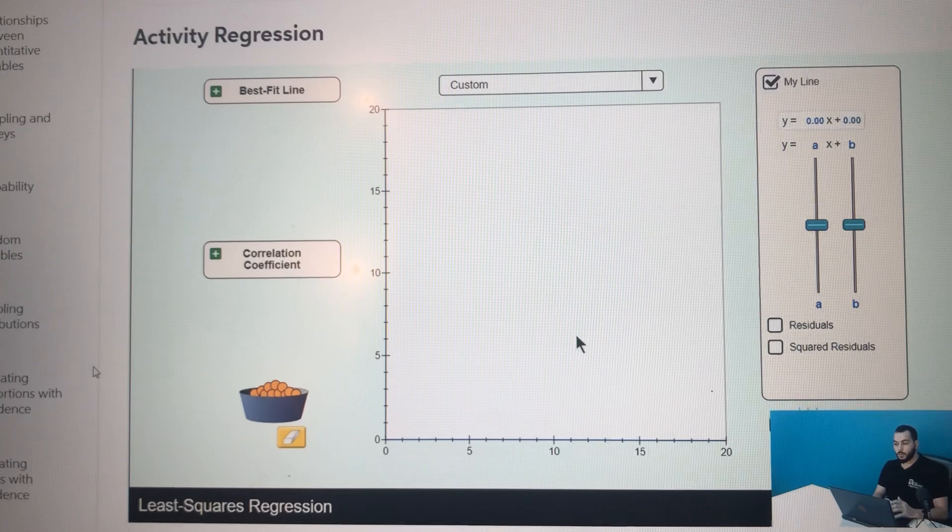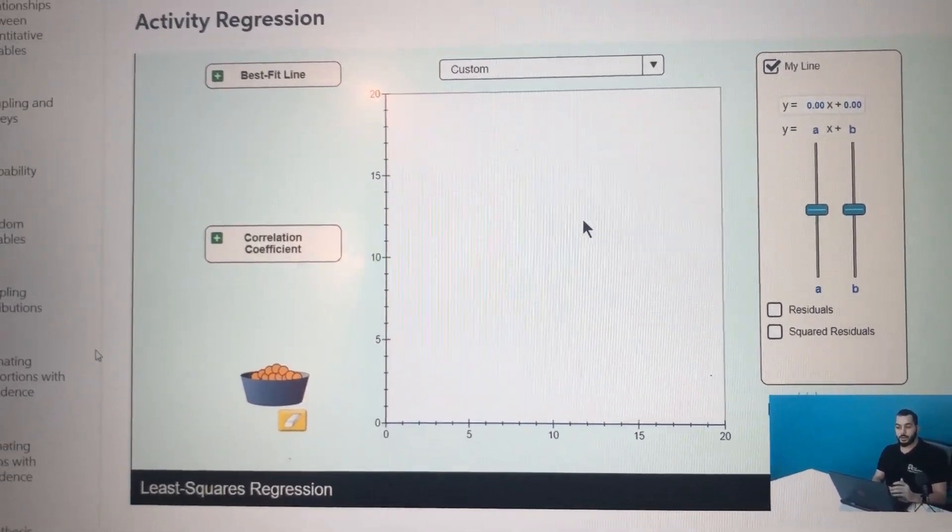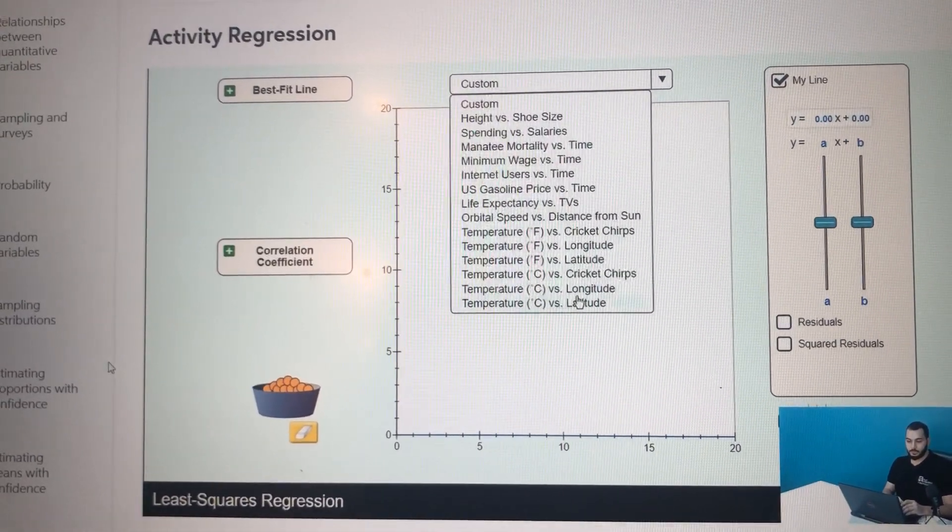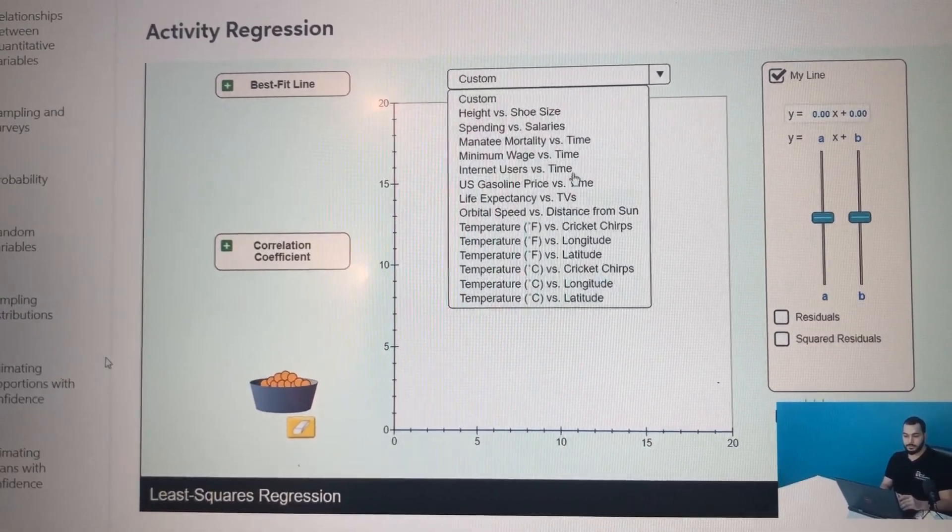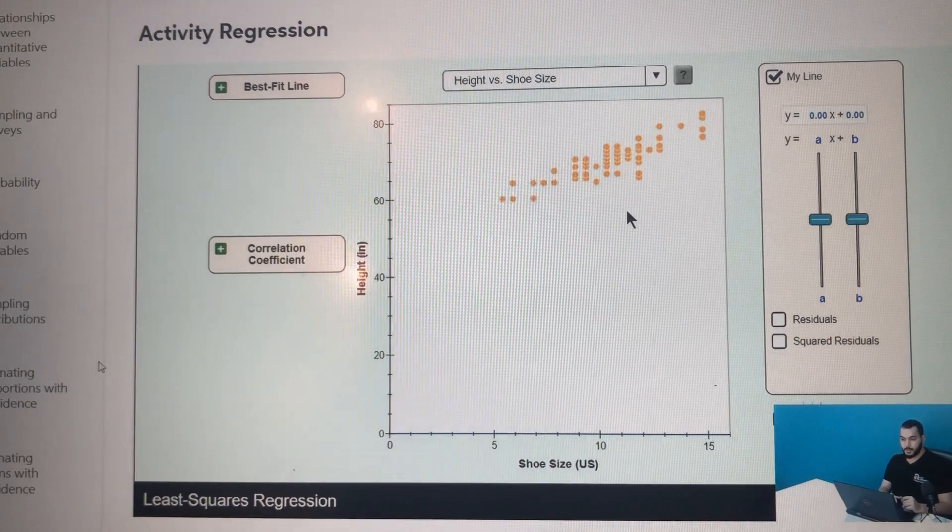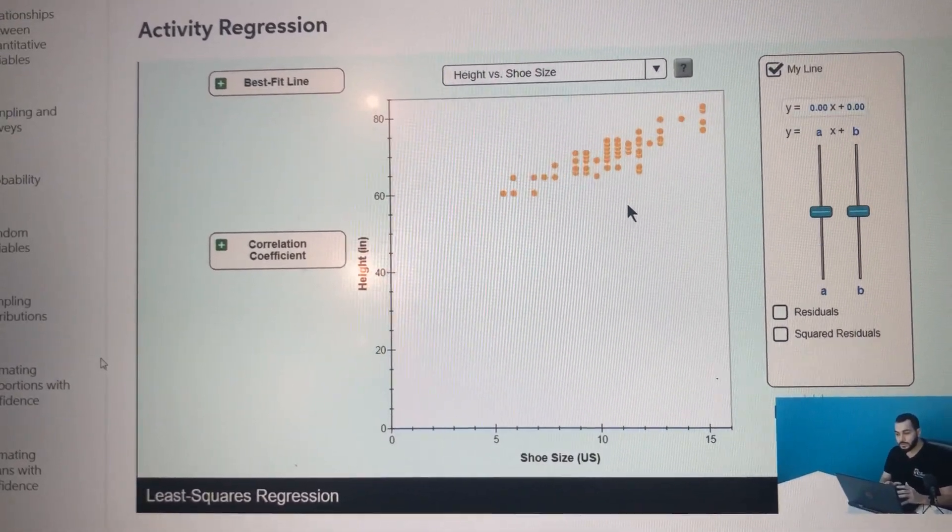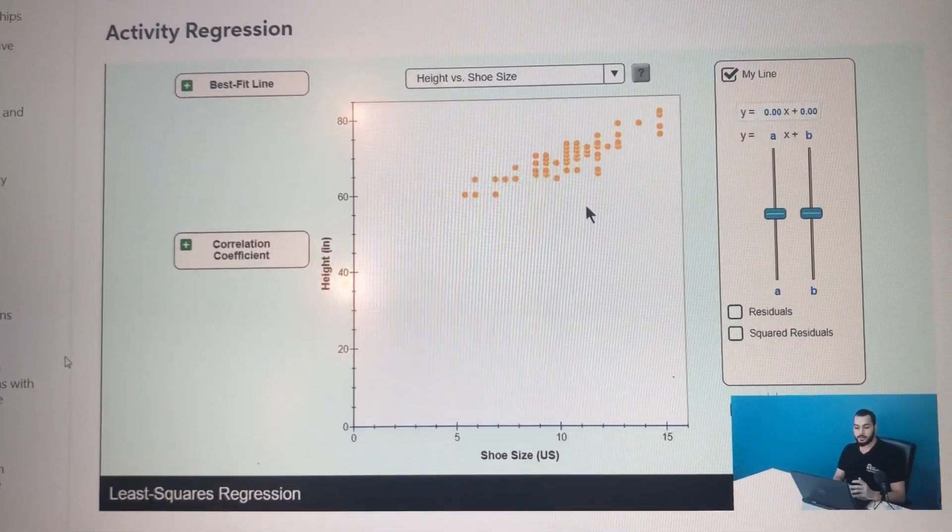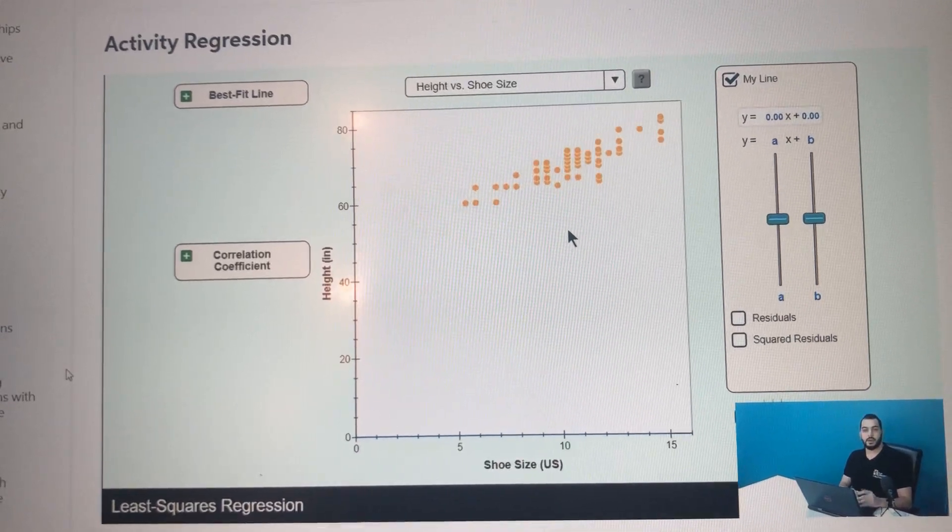Let's start by choosing one of the available examples of a data set. Here we have multiple examples. Let's choose the height versus shoe size example. Looking at the data points, you will notice a pattern that the higher the shoe size, the higher the height.